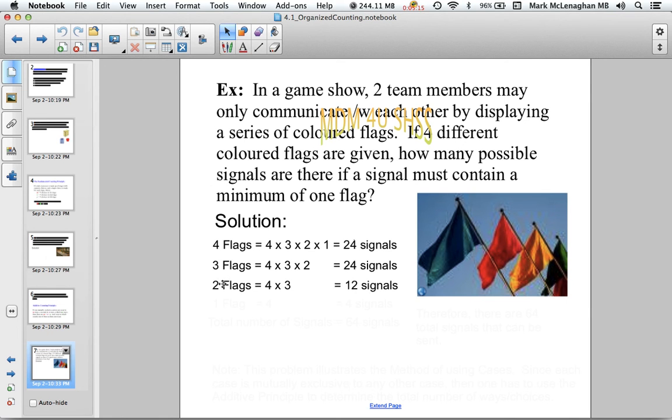Finally, we can have one-flag signal, which is just four signals. Now you're thinking, oh that looks more like the fundamental counting principle, which it is, for each stage. But each of these signals with different numbers of flags makes each thing mutually exclusive, because we can't have a four-flag signal and a three-flag signal at the same time. This is where the additive principle comes in. The total number of signals is 64, because we add up each of these.